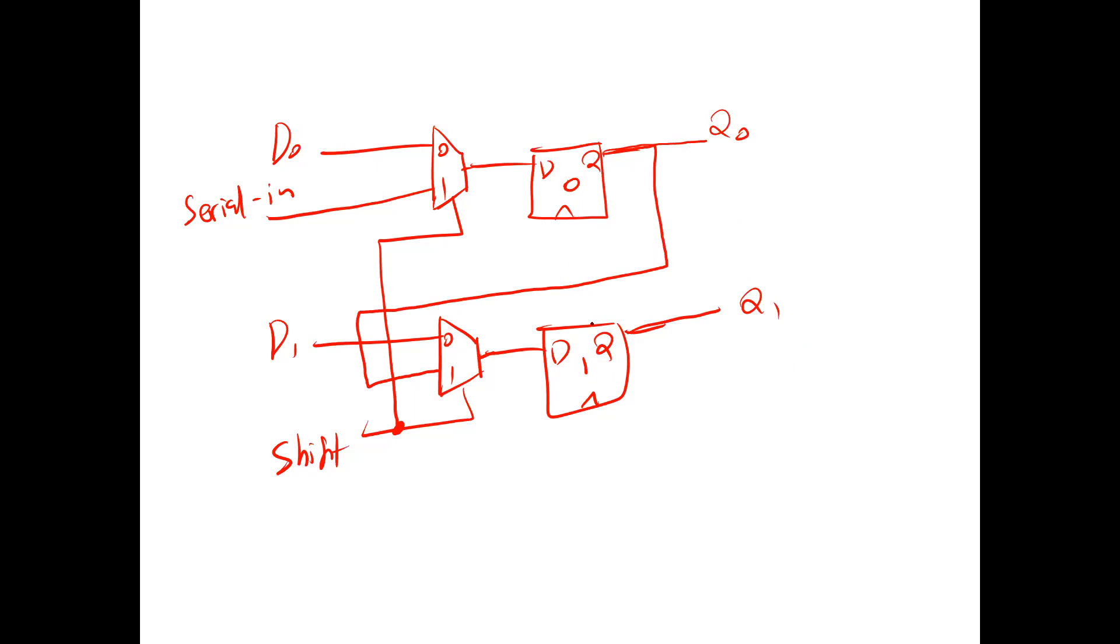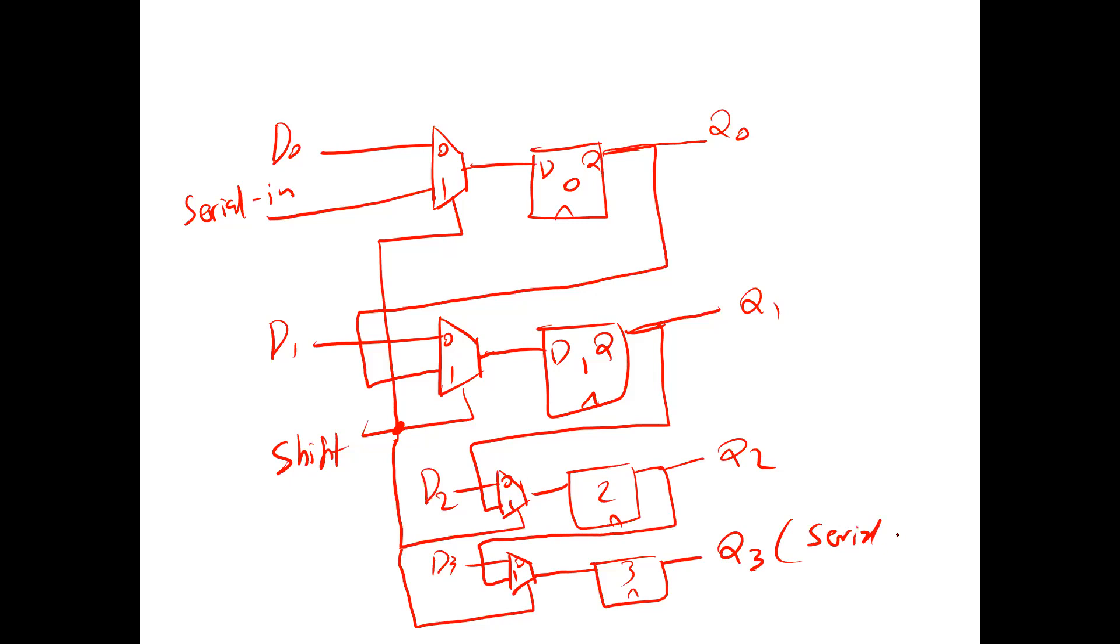This way, I have a shift register that is capable of parallel loading and capable of shifting to the right. Can we expand it to a 4-bit register? Of course, all we need to do is add two more flip-flops here for Q2 and Q3. This will connect to the same shift. Input 0 will connect to the parallel input D2, and Q1 will feed into this input. So it's the same; we just need to expand. Input 0 will connect to D3, the select will connect to shift, and the output of Q2 will be fed to input one of the multiplexer. And this is Q2, this is Q3, and at the same time it will be serial out.